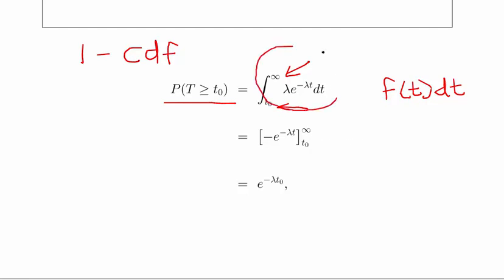When we integrate, we end up with minus e^(−λt) evaluated between the limits t₀ and infinity, and we get the result. That should be a fairly straightforward question, dovetailing with work on continuous distributions. Remember that exponential functions, logarithms and related rules come up a lot, so it's a good idea to have these clear in your head.